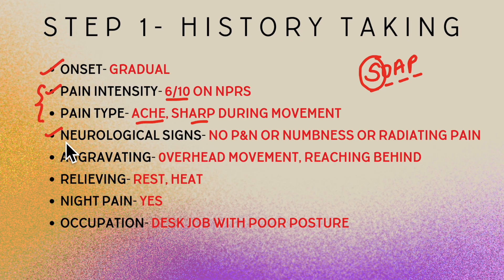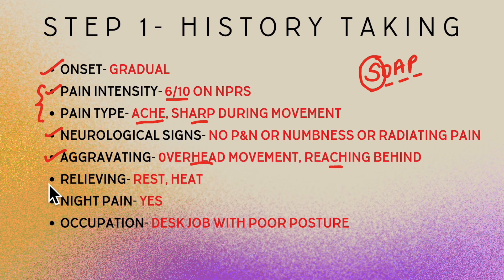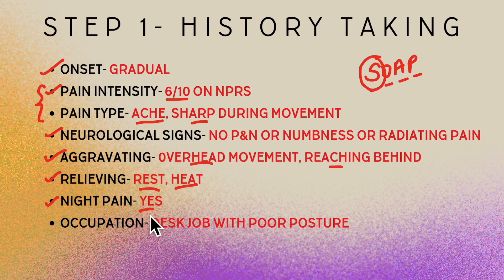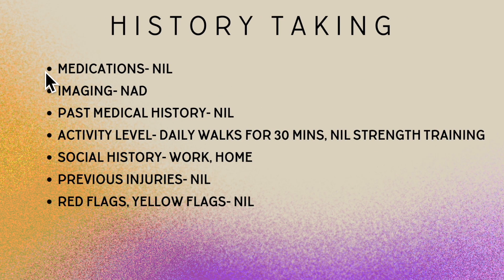Neurological involvement was excluded from the subjective, but we still need to look at objective testing for that. Aggravating symptoms were overhead movements and reaching behind. Things that made his pain better included resting, avoiding movement, and applying heat. He did have pain at night, especially lying on the affected shoulder. His occupation was a desk-based job for a couple of years, with poor posture and no proper ergonomic support.